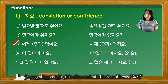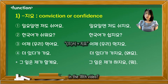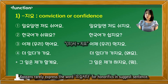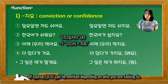In suggestion sentences, 지요 is often used with the honorific word 으시. Do you remember what was described about the forms in suggestion with honorifics in the 18th video? Koreans rarely express the word 으십시다 for honorifics in such a sentence. Instead, you use 으시지요. Of course, 으시 can be omitted depending on who you are talking to.